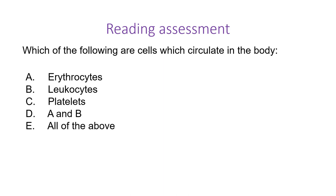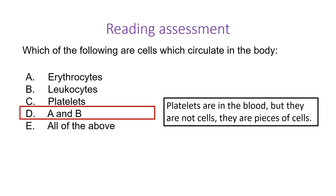If you've done the reading, try the questions. Which of the following are cells that circulate in the body: erythrocytes, leukocytes, platelets, A and B, or all of the above? The answer is A and B — these are the only two actual cells listed. Erythrocyte and leukocyte both contain the word meaning 'cell.' Platelets are not complete cells; they're portions of cells released into the body, and while they're very important for clotting, they themselves are not cells.